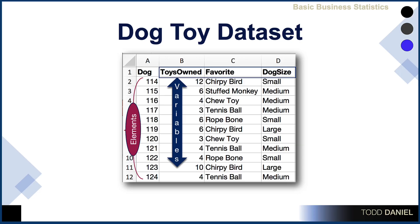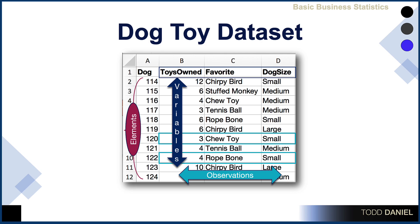All of the observations for each participant or element in the data set will be contained in rows. When we see the confluence of both a row and a column, that would be a data point. For instance, the number of toys owned by dog 121 is 4; dog 118 has a favorite toy of the rope bone; and dog 114 is a small sized dog.